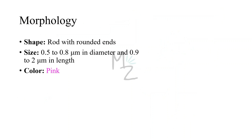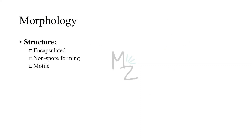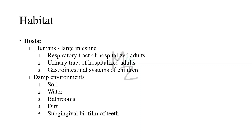Morphology: Serratia marcescens is a rod-shaped bacterium with rounded ends. It varies in size from 0.5 to 0.8 micrometers in diameter and 0.9 to 2 micrometers in length. It appears pink colored because it is gram-negative. Structurally, it is encapsulated, meaning it has a capsule. It does not form spores and is motile.